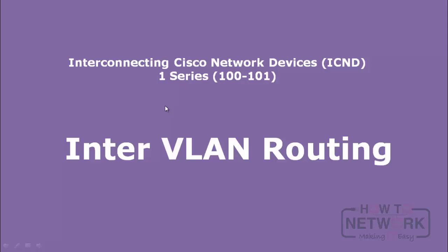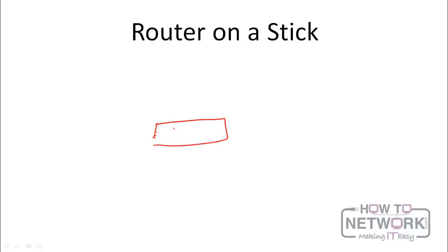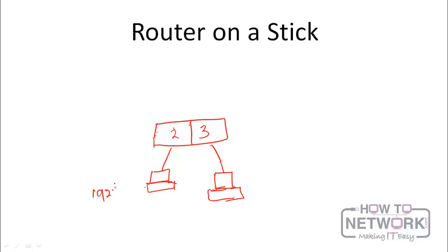In this video we're going to be looking at inter-VLAN routing. Assuming you have a switch with two VLANs — VLAN 2 and VLAN 3 — and you have a computer connected to VLAN 2 and another connected to VLAN 3, these two computers are on different networks: probably 192.168.1.0 and 192.168.2.0. A VLAN segments broadcast domains, so they are on two different networks and cannot communicate.